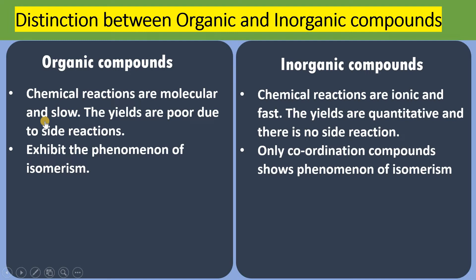The chemical reactions of organic compounds are molecular and slow; therefore the yields are poor due to side reactions. Whereas inorganic compounds are ionic and their reactions are very fast, yields are quantitative, and there are no side reactions. The phenomenon of isomerism is shown by organic compounds, whereas inorganic compounds do not show isomerism. Only coordination compounds show the phenomenon of isomerism.